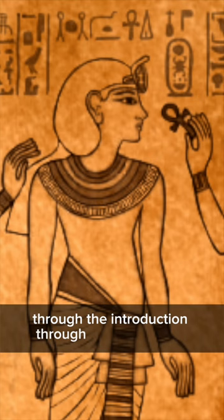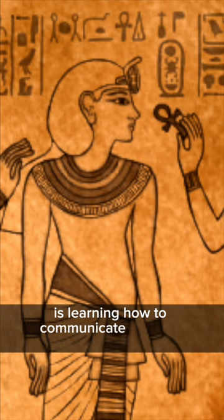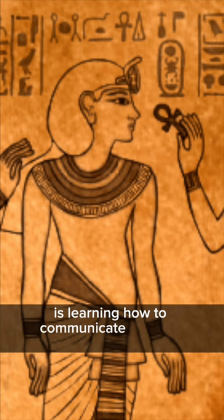The concept here is that the initiate is learning how to communicate with the netters, and that geometric forms emanate specific types of energy that are a part of the initiation and allow them to manipulate the net.